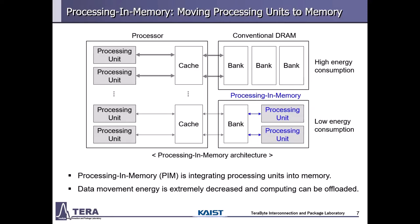In order to overcome this burden, one of the promising approaches is Processing-In-Memory architecture, PIM. PIM moves and integrates processing units into the memory to reduce data movement energy. In conventional DRAM, all data must be fetched to the processor and stored back in memory, meaning data movement energy is very high. In the PIM architecture, processing units reside in the memory, so data movement is low. The main idea of PIM is that major computation is done on the processor and some computation is offloaded to PIM with low energy consumption.